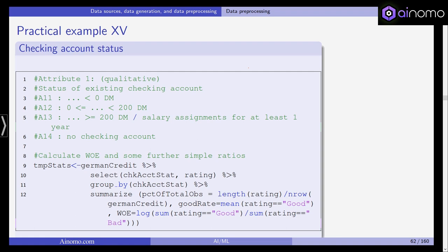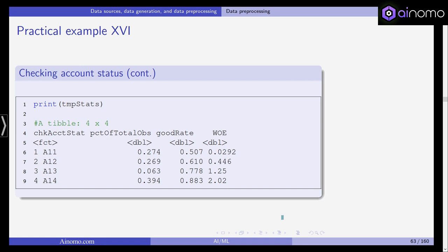Let's do this for the checking account status. We'll use the first attribute, which is a qualitative one. Remember that we have four levels: below zero deutschmark, between zero and 200 deutschmarks, more than 200, and no checking account. We calculate the weight of evidence and some further simple ratios to compare. We are using the pipe operator from the dplyr package. We select the checking account status variable and calculate the percentage of total observations, which is the length of rating divided by the number of rows. The good rating is the mean when rating is good, and the weight of evidence is the log of the sum of good ratings divided by the sum of bad ratings.